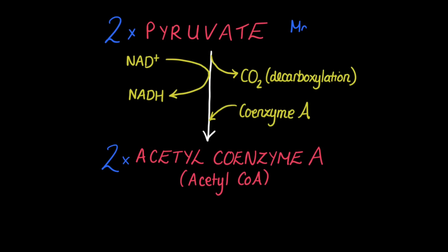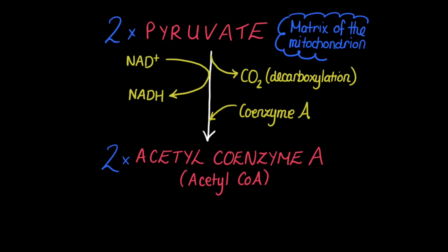As a reminder, this is all happening in the matrix of the mitochondrion. Once we've produced our acetyl coenzyme A, it is this molecule that then moves forward and enters the next stage of aerobic respiration, known as the Krebs cycle.